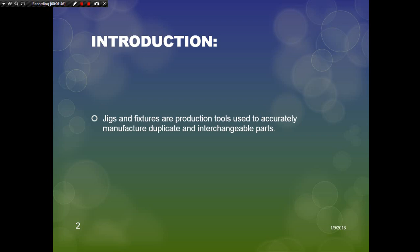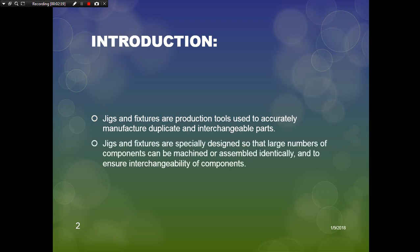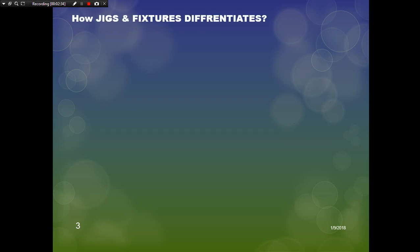Jigs and fixtures are production tools used to accurately manufacture duplicate and interchangeable parts. Interchangeability is the ability to select components for assembly at random and fit them together within the proper tolerances. Jigs and fixtures are specially designed so that a large number of parts and components can be machined or assembled identically, ensuring interchangeability of the components.